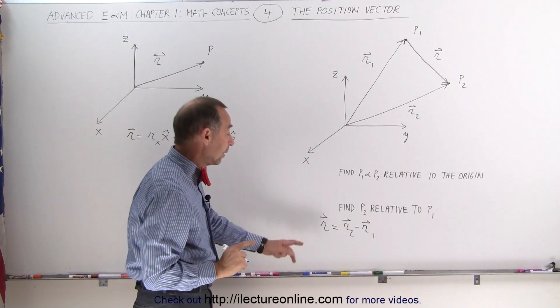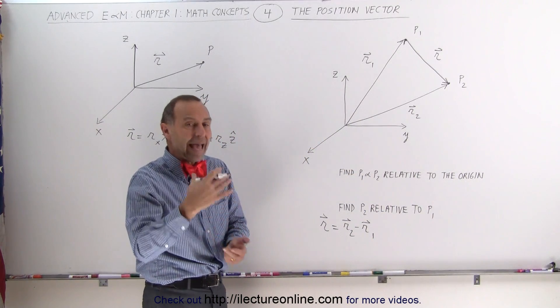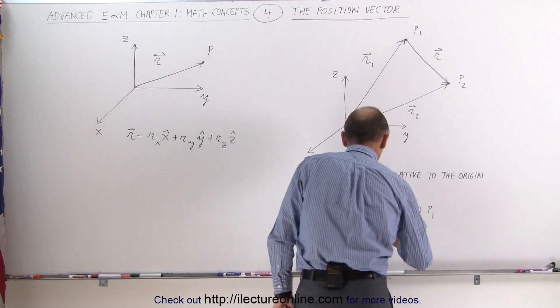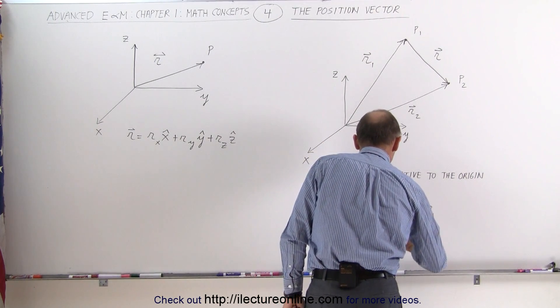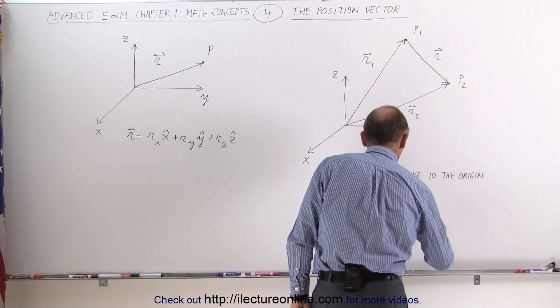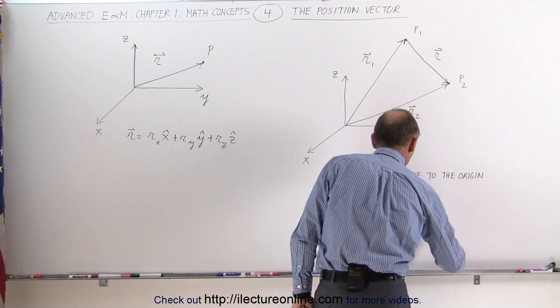How do we know that's correct? Well, when we subtract the vector, that's like adding the negative of the vector. So this can be written as the position vector r sub 2 plus the negative of the position vector r sub 1.